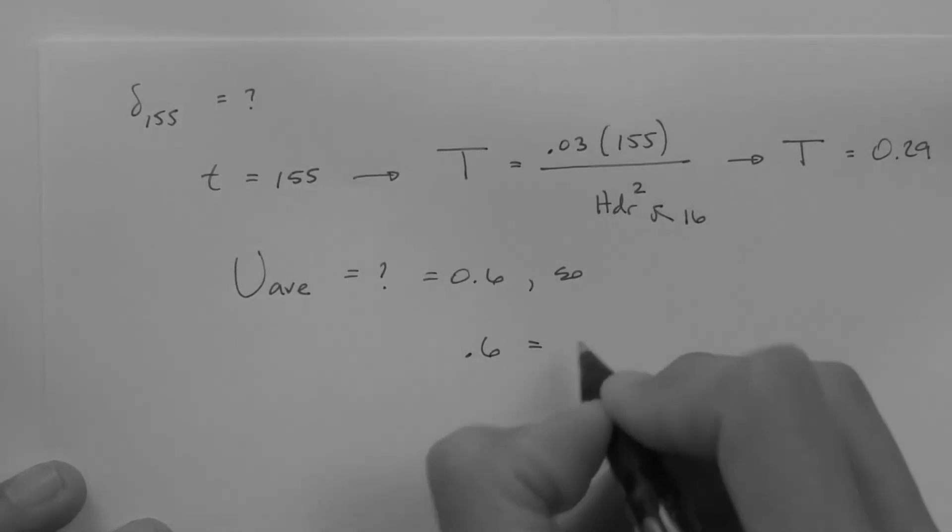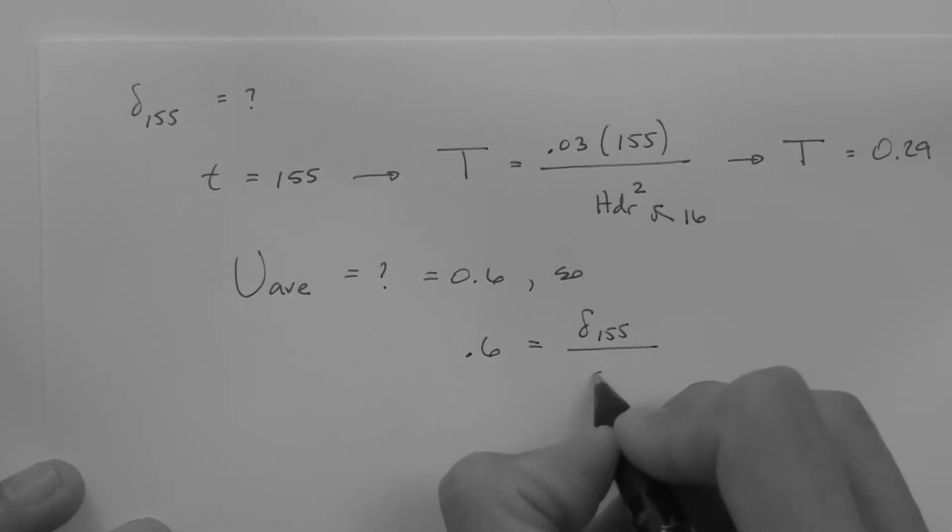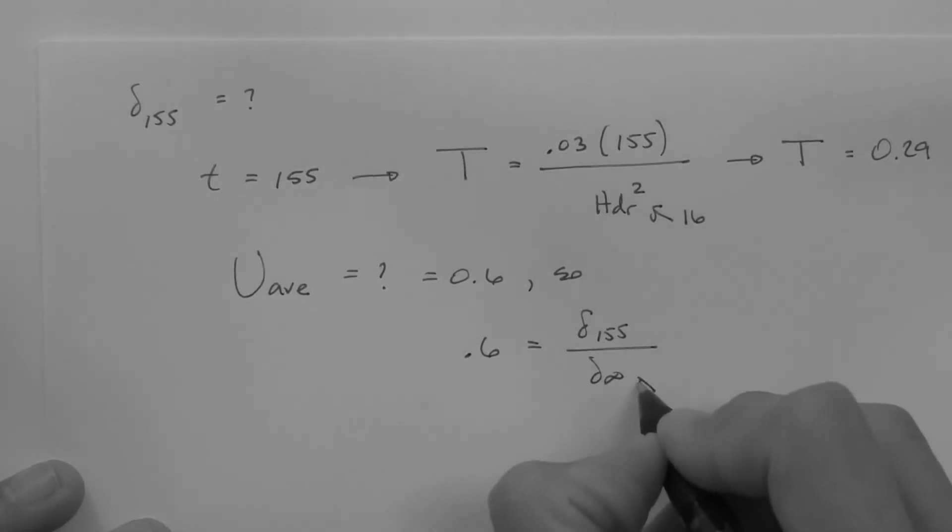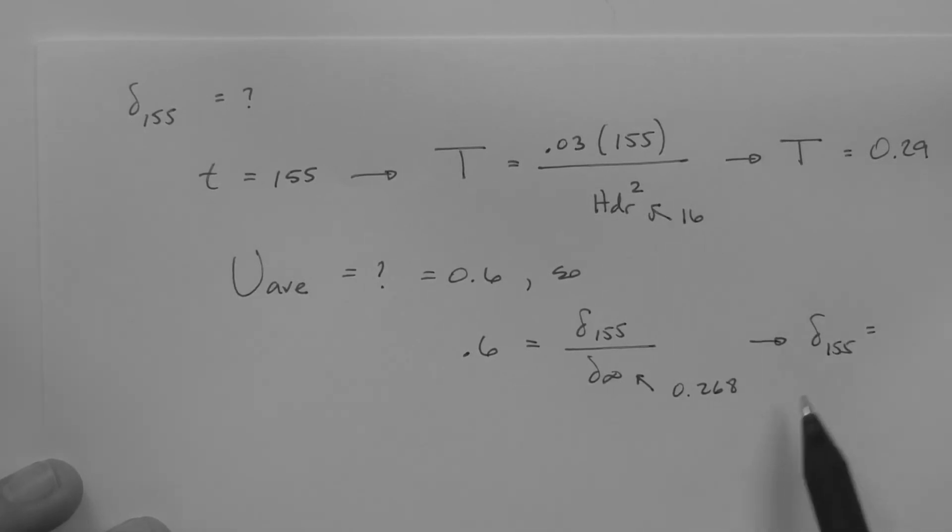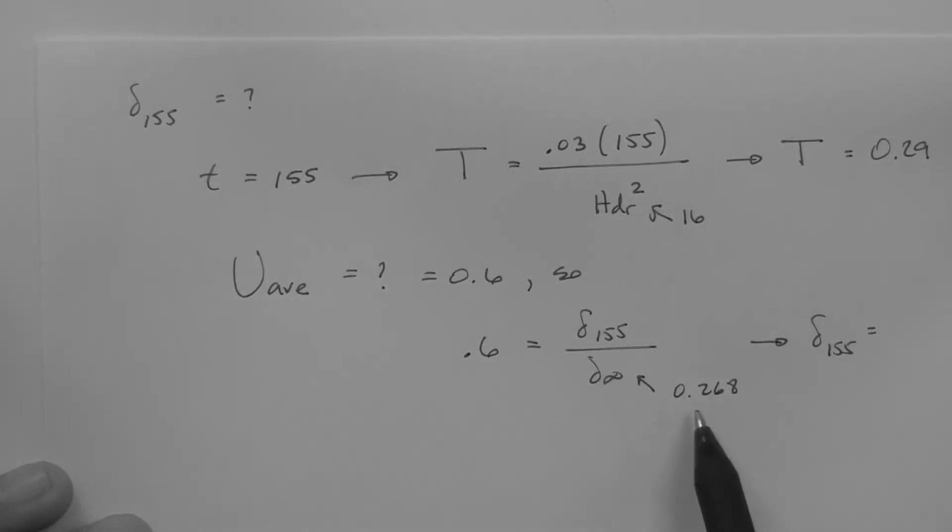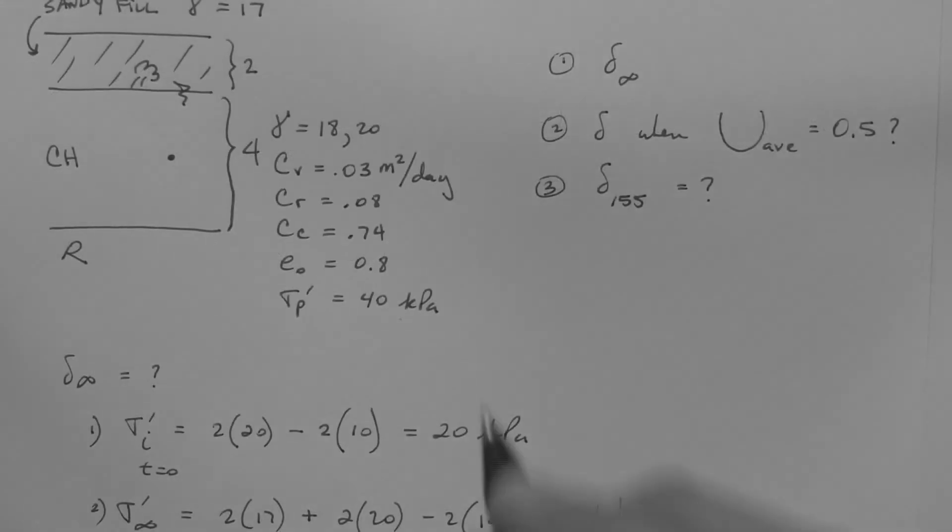0.6 is equal to the settlement at 155 days divided by the ultimate settlement, which we found to be 0.268 meters. Therefore, the settlement at 155 days is 0.268 times 0.6. 0.161 meters. How about another question?